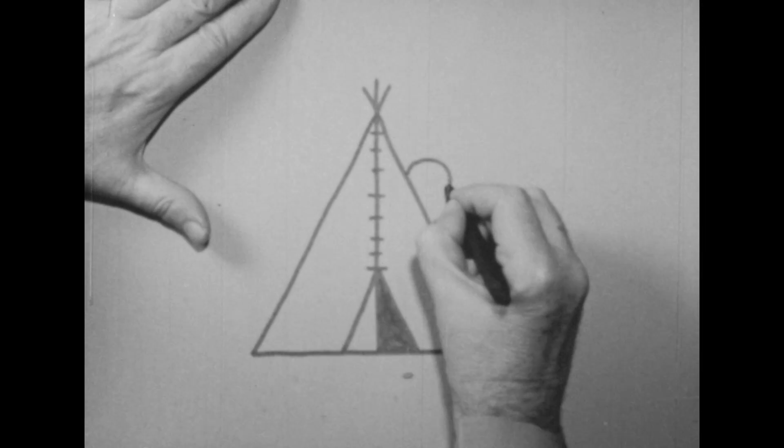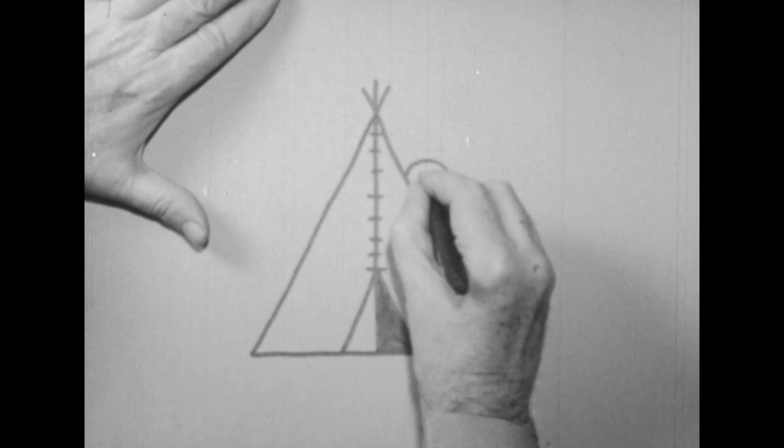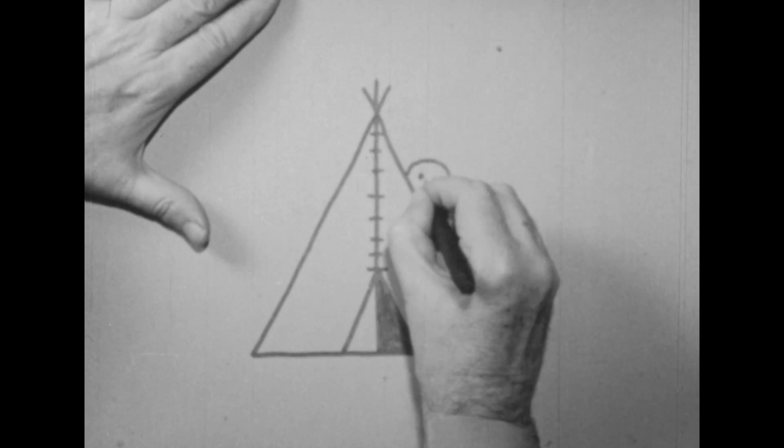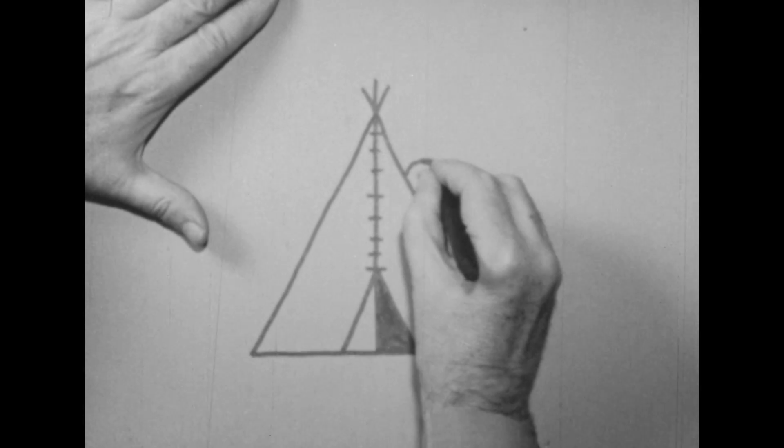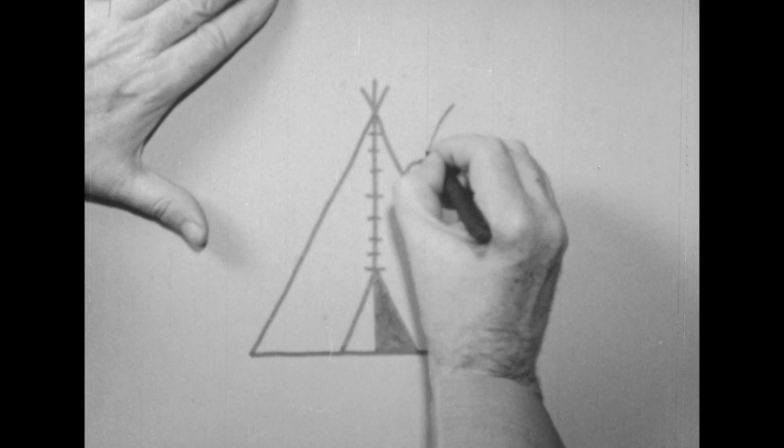And guess who this is peeking around the corner? Why, that's Big Chief Rain in the face. What's that he's holding? Why, it's General Custer still beating Hart.